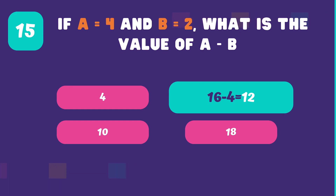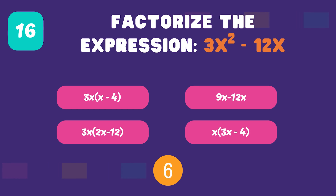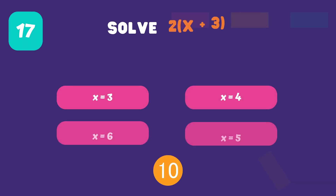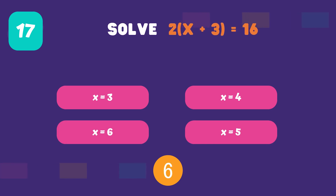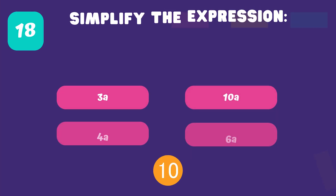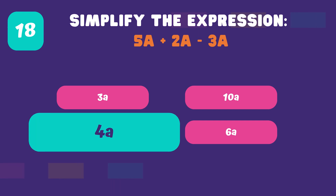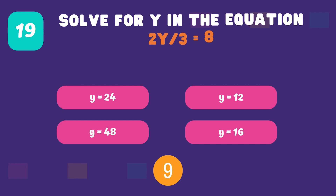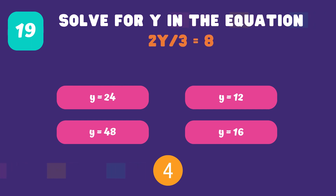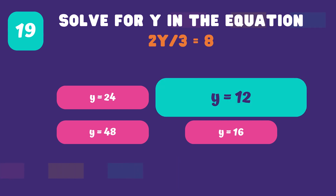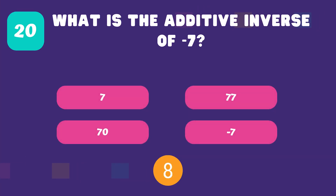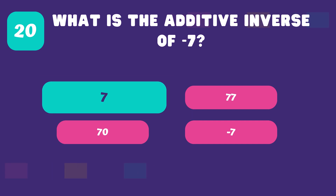12. 3x times the quantity x minus 4. X equals 5. 4A. Y equals 12. Is 7.